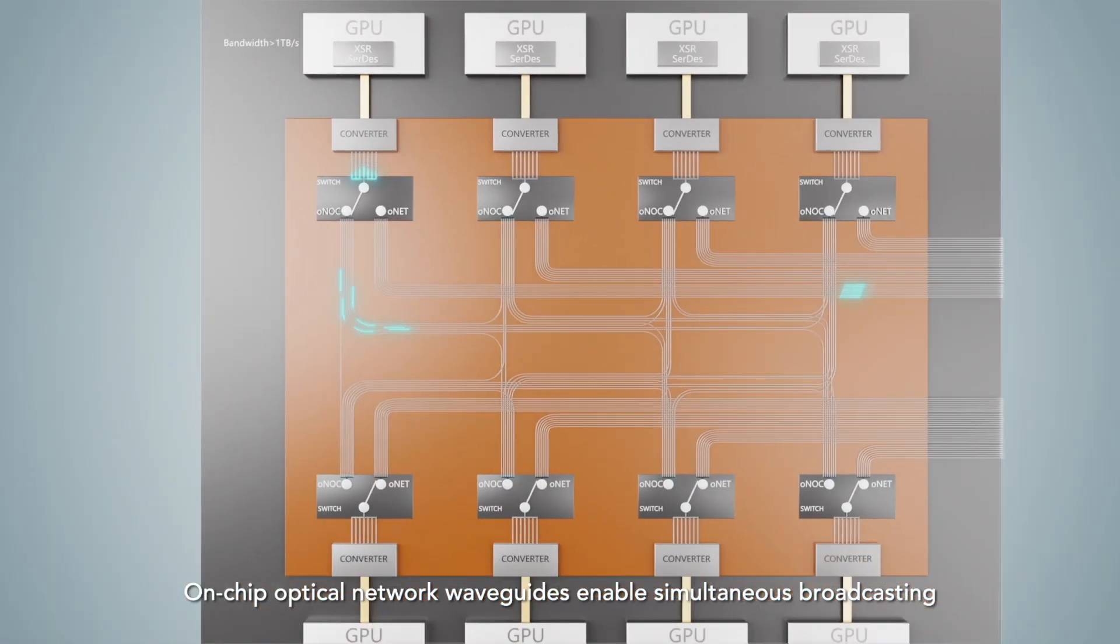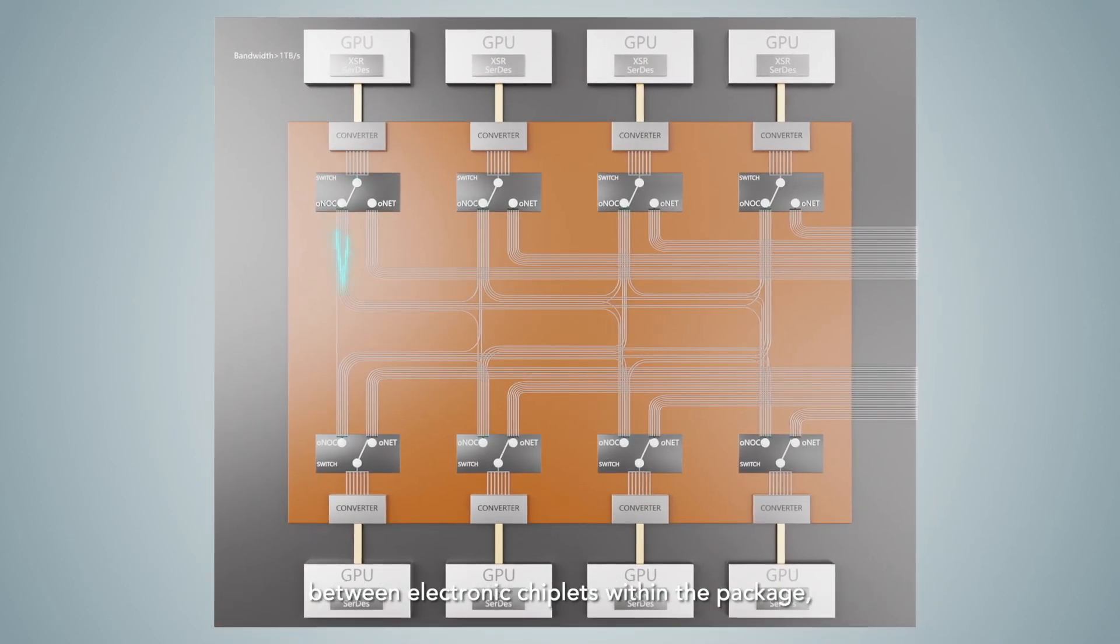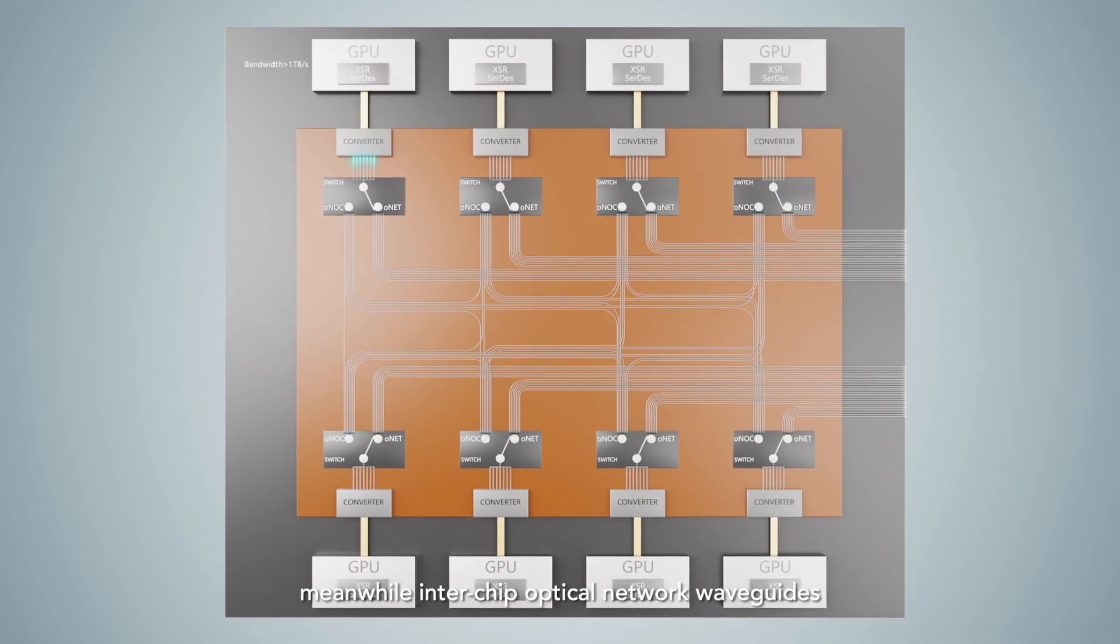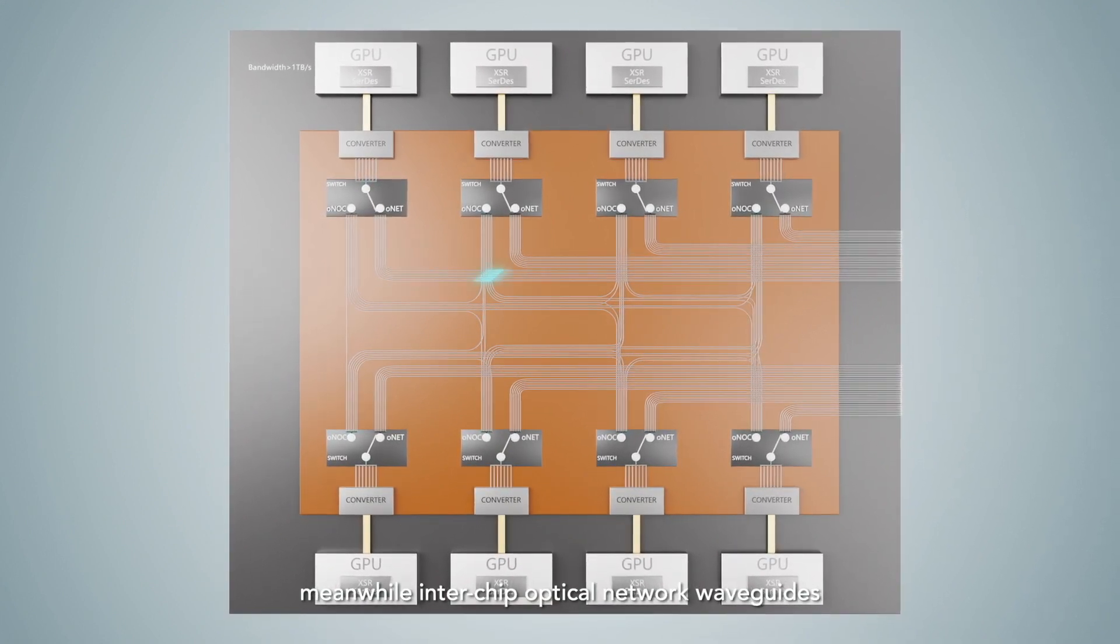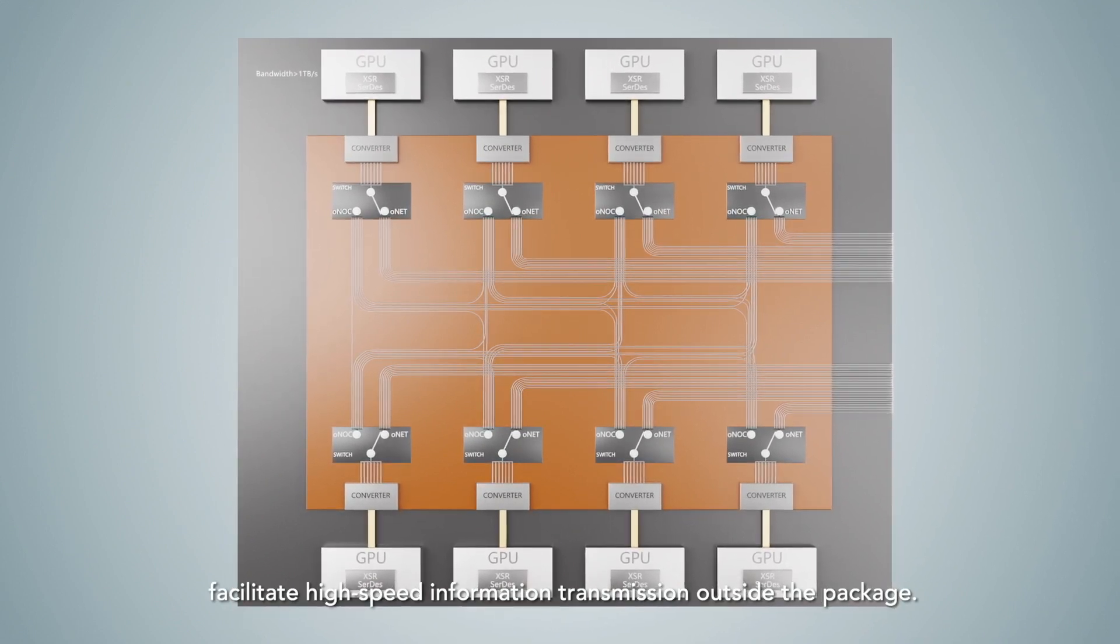On-chip optical network waveguides enable simultaneous broadcasting between electronic chiplets within the package. Meanwhile, interchip optical network waveguides facilitate high-speed information transmission outside the package.